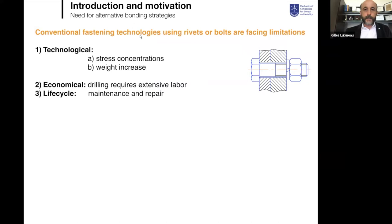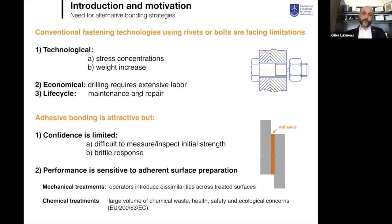If we look at conventional fastening technologies using rivets or bolts, they face obvious limitations today: they introduce stress concentrations, increase weight significantly, are expensive in terms of labor, and maintenance and repair is not convenient. So there is a big push towards integral adhesive bonding — what we call secondary bonding — where pre-processed parts are assembled using an adhesive layer between them.